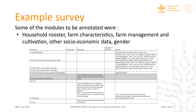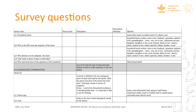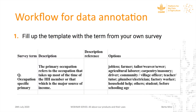The example survey is the broader one and it had modules similar to the hundred questions: household information, farming characteristics, assets, farm management including input and cultivation practices, income, expenditure, and other socioeconomic data.